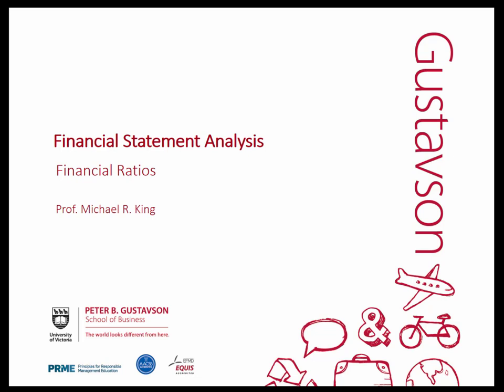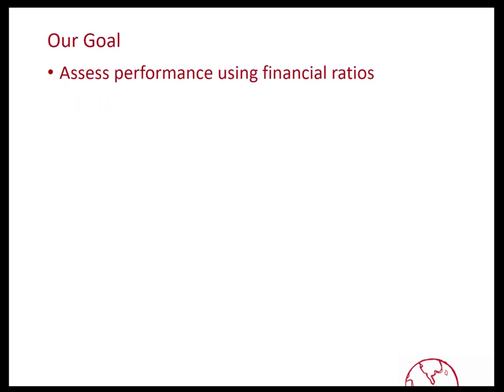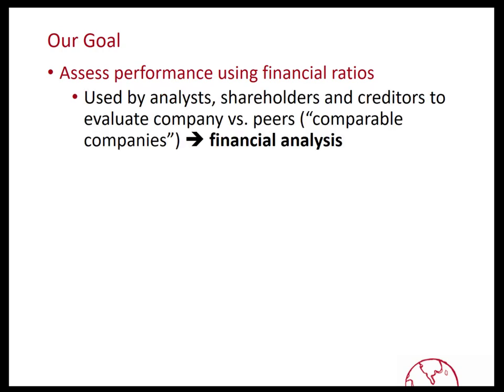This is Michael King. In this first of two videos on financial statement analysis, we're going to look at financial ratios. This is Sections 4.1 through 4.6 in Booth Clearing Rokita. Our goal today is really to understand how to use financial ratios to assess a company's financial performance. This is a method used by equity analysts, shareholders, as well as creditors to evaluate a company, typically by looking at a company relative to its closest peers, which may be called comparable companies or Comcos.